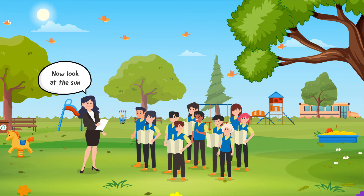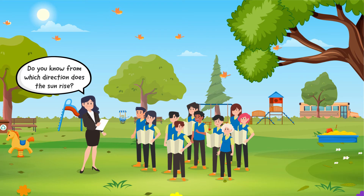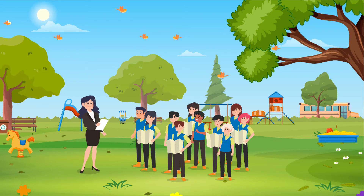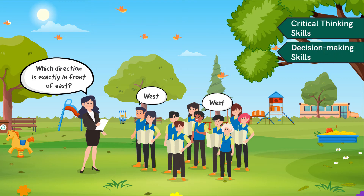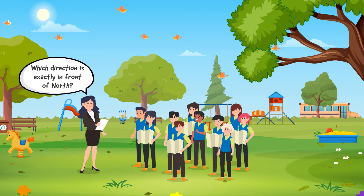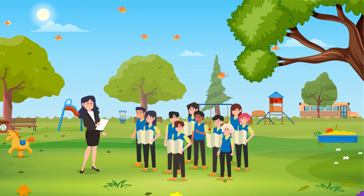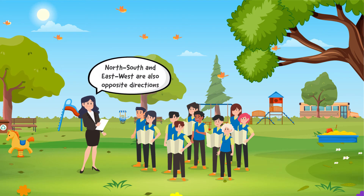Next, ask the students to look at the Sun to help them understand the four directions. Enquire: do you know from which direction does the Sun rise? Possible responses will be East. Then ask which direction is exactly in front of the East — possible responses will be West. Skills of critical thinking and decision-making will be developed as students give possible responses. Similar questions can be asked for North and South directions, mentioning that North-South and East-West are also opposite directions.